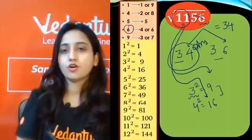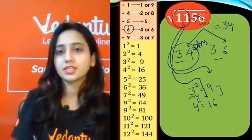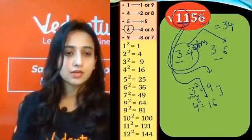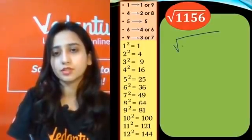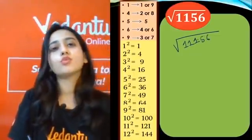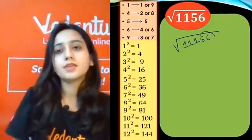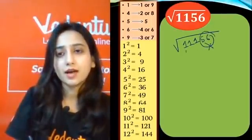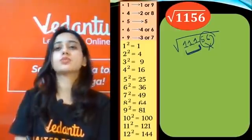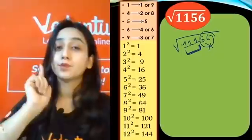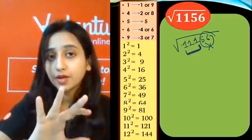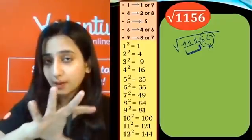Let me also clarify: suppose you have a 5-digit number under the square root, the same technique applies. You rule out the last two digits, find the number whose square is nearest to the remaining digits, and follow the same steps. All the steps remain the same, provided the number inside the square root is a 5-digit number.